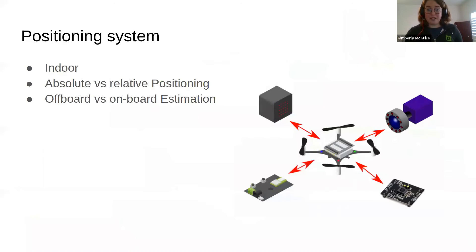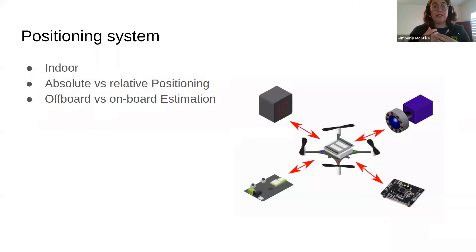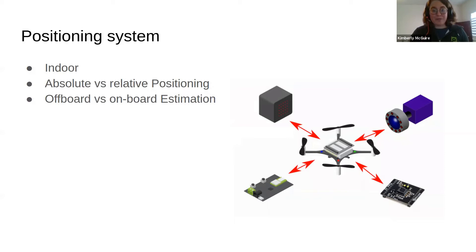There are several categories to consider for positioning systems. Outdoors you have GPS, but I'm mostly going to talk about indoor positioning systems. You can categorize them as absolute positioning versus relative positioning — a global coordinate system versus one originating from wherever the quadcopter started. There's also a distinction between off-board estimation, where an external computer estimates the position for you, versus on-board estimation where the drone does it completely by itself. In swarms, that distinction really matters.